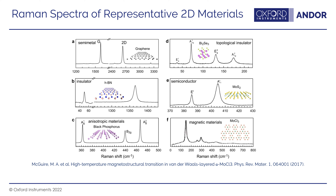Here we're showing some representative Raman spectra of 2D materials. Box A shows graphene with its characteristic G and 2D modes. Box B is hexagonal boron nitride, an insulator often used in heterogeneous 2D semiconductor devices. Box C is black phosphorus, Box D is topological insulator bismuth selenide, Box E is semiconductor molybdenum sulfide, and Box F is molybdenum chloride, which has shown promise as a magnetic material at elevated temperatures. All of these materials can be clearly distinguished and characterized using Raman spectroscopy.